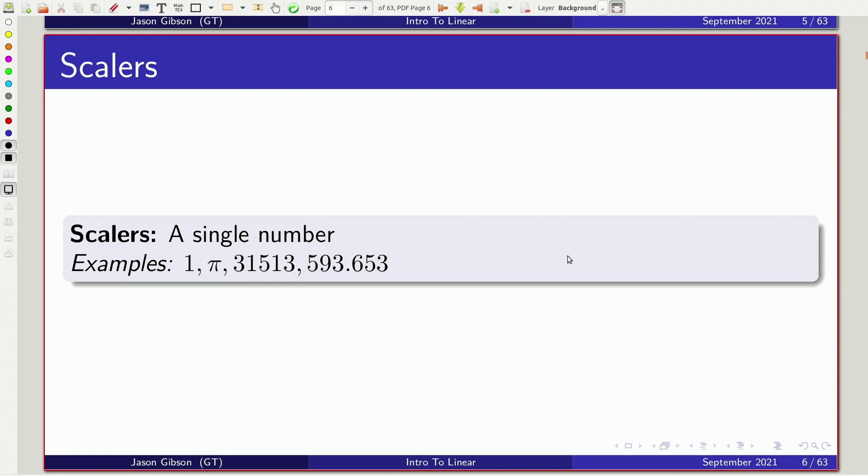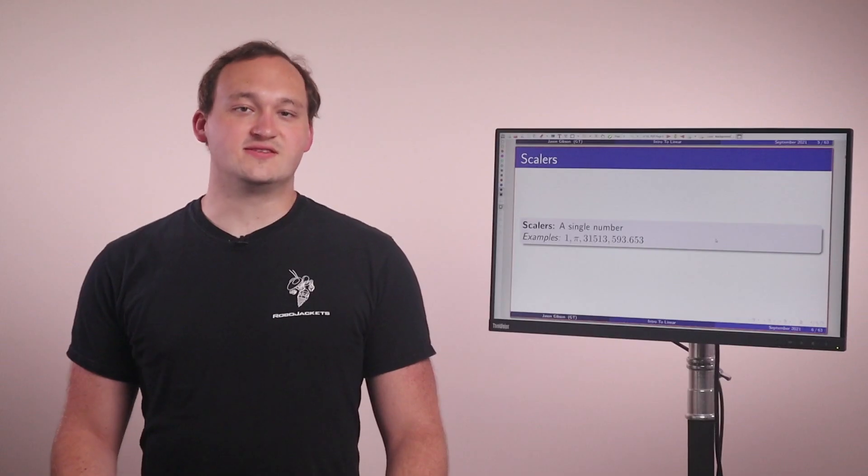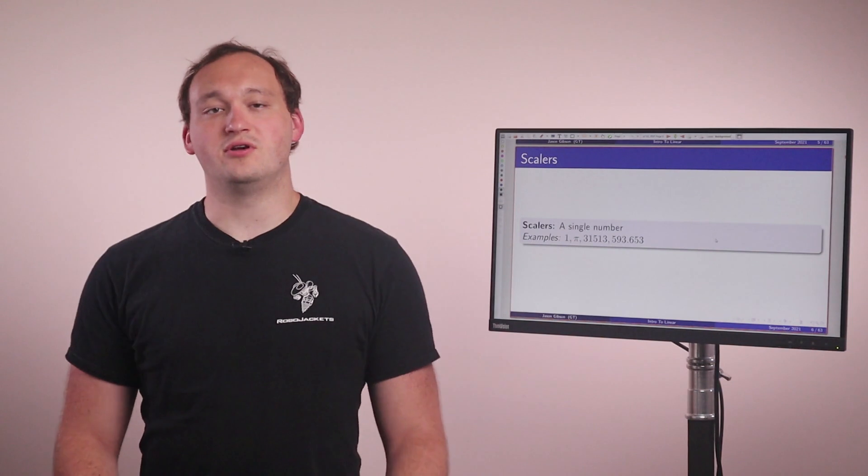So the first idea in linear algebra is a thing called a scalar. A scalar is just a single number. It's kind of what you've been working with previously when everything is a scalar. Scalars can be any number, so one, pi, or a very large number, it doesn't matter.